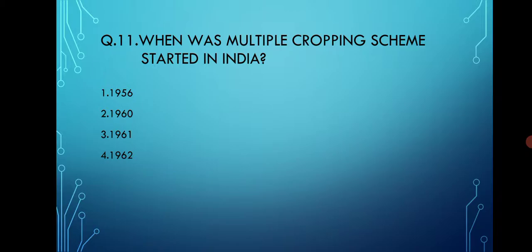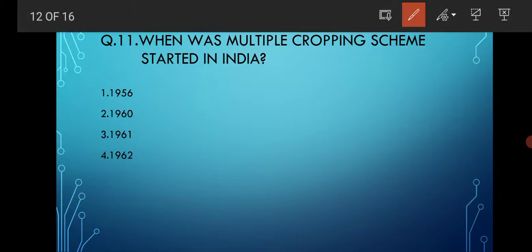When was the Multiple Cropping Scheme started in India? The options are 1956, 1960, 1961, and 1962. Multiple cropping means growing two or more crops in a single patch of land.